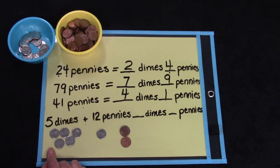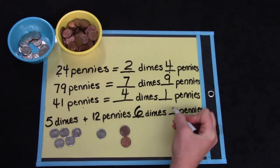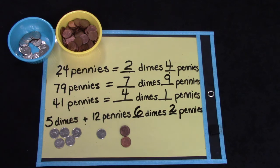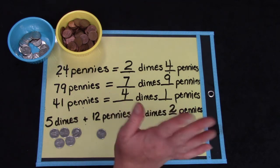So, how many dimes do we have all together? Yes, it is 6 dimes and 2 pennies. Oh, class, I would like for you to practice this today. Have fun playing with dimes and pennies. Bye-bye!